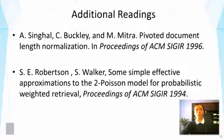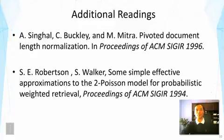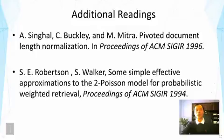There are some additional readings. The first is a paper about pivoted length normalization — an excellent example of using empirical data analysis to suggest the need for length normalization and then derive the normalization formula. The second is the original paper where BM25 was proposed. The third paper has a thorough discussion of BM25 and its extensions, particularly BM25F. And finally, the last paper has a discussion of improving BM25 to correct the over-penalization of long documents.